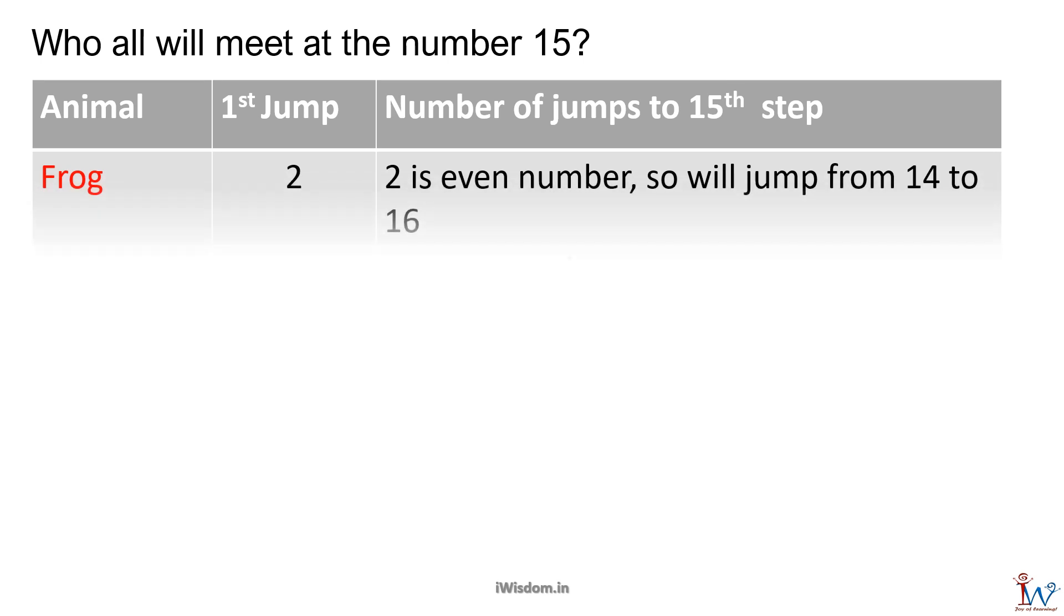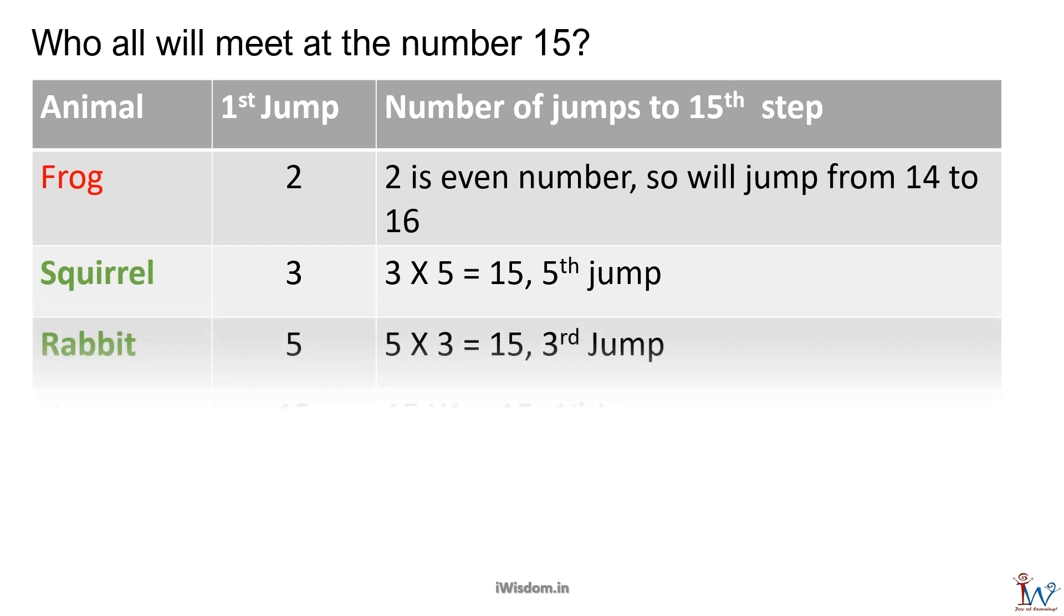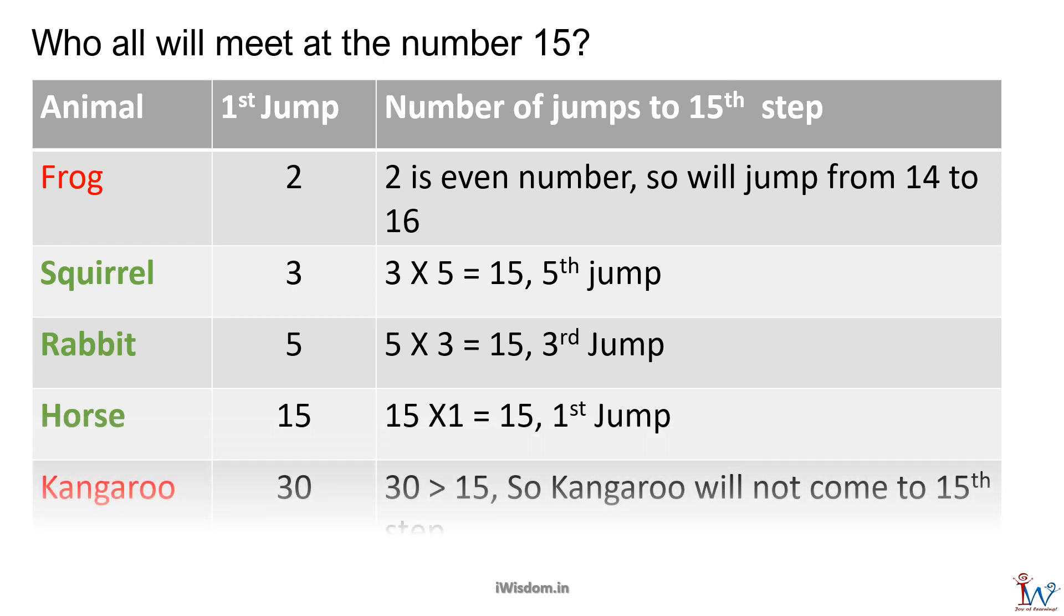Squirrel jumps in 3 steps, and we know 5 times 3 is 15. So it will visit 15th step on its 5th jump. Rabbit jumps in 5 steps, and we know 3 times 5 is 15. So it will visit 15th step on its 3rd jump. Horse jumps in 15 steps, and we know 1 times 15 is 15. So it will visit 15th step on its 1st jump itself.